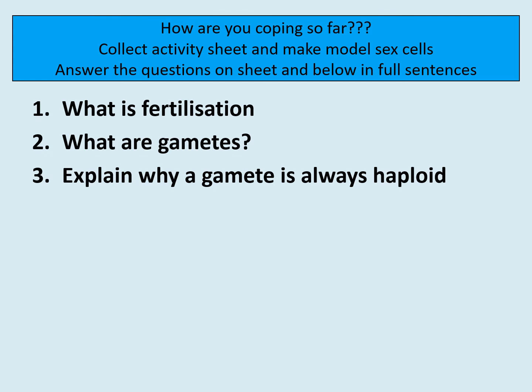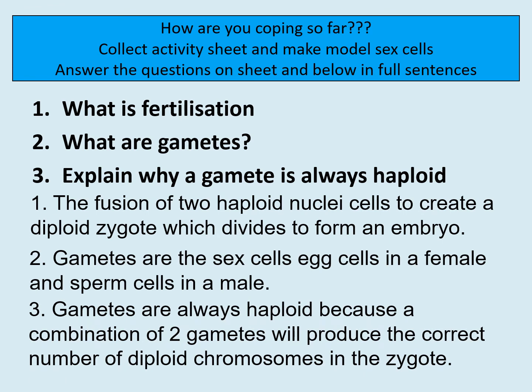You should now be able to answer the three questions. The questions are: what is fertilization; what are gametes; and explain why a gamete is always haploid. Fertilization is the fusion of two haploid nuclei to create a diploid zygote which divides to form an embryo. Gametes are the sex cells — egg cells in a female and sperm cells in a male. Gametes are always haploid because a combination of two gametes will produce the correct number of diploid chromosomes in a zygote.